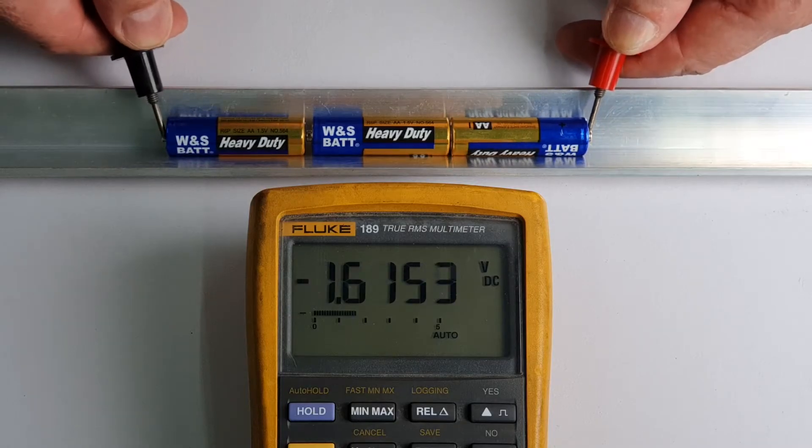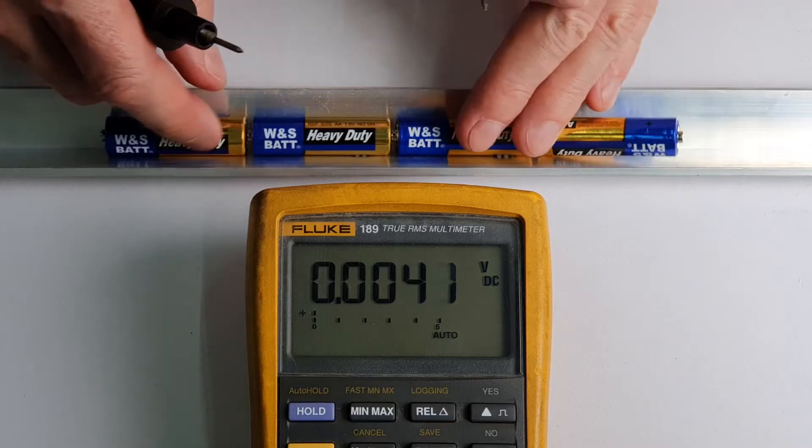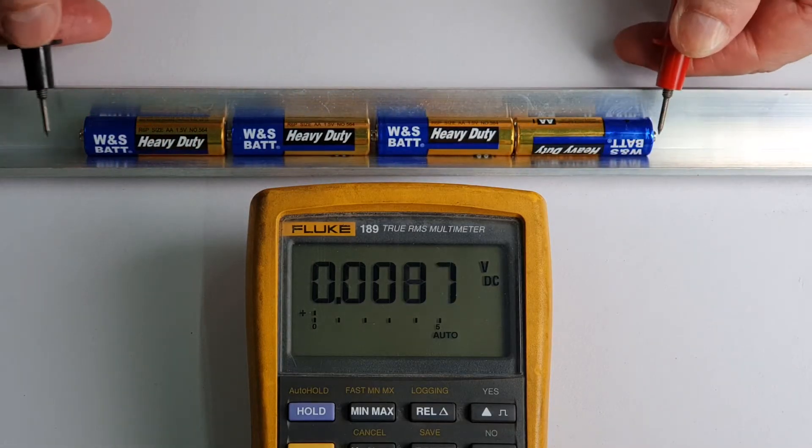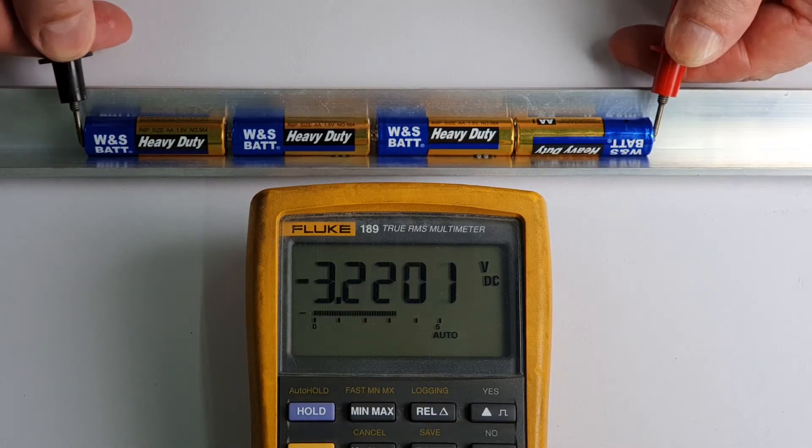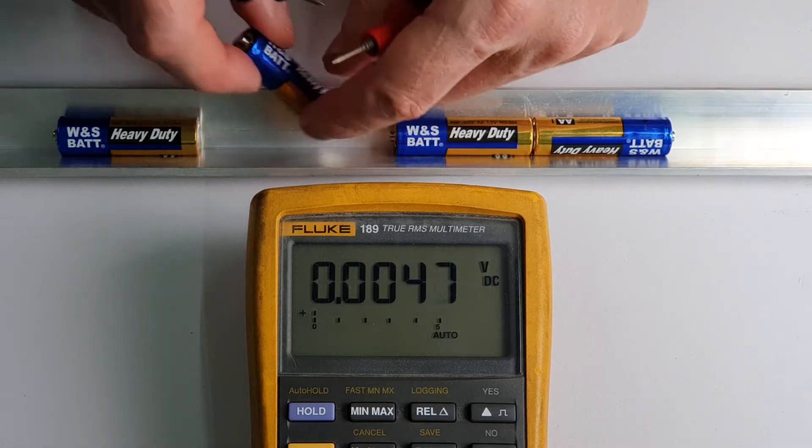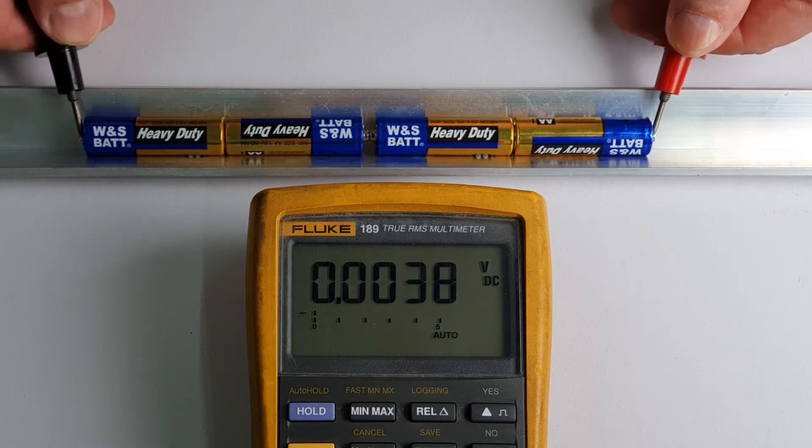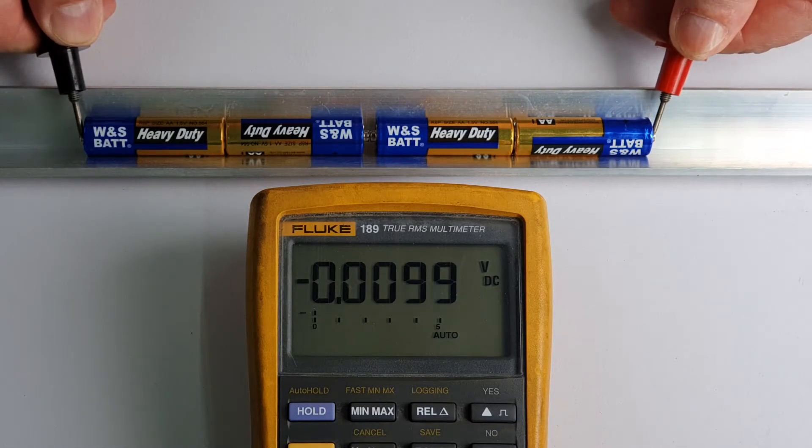Playing around with these different combinations of batteries and different orientations, we can see that the total output voltage is always equal to the sum of all the batteries taking the polarity into account. The opposing polarities subtract from each other while the polarities that are the same add to the voltage.